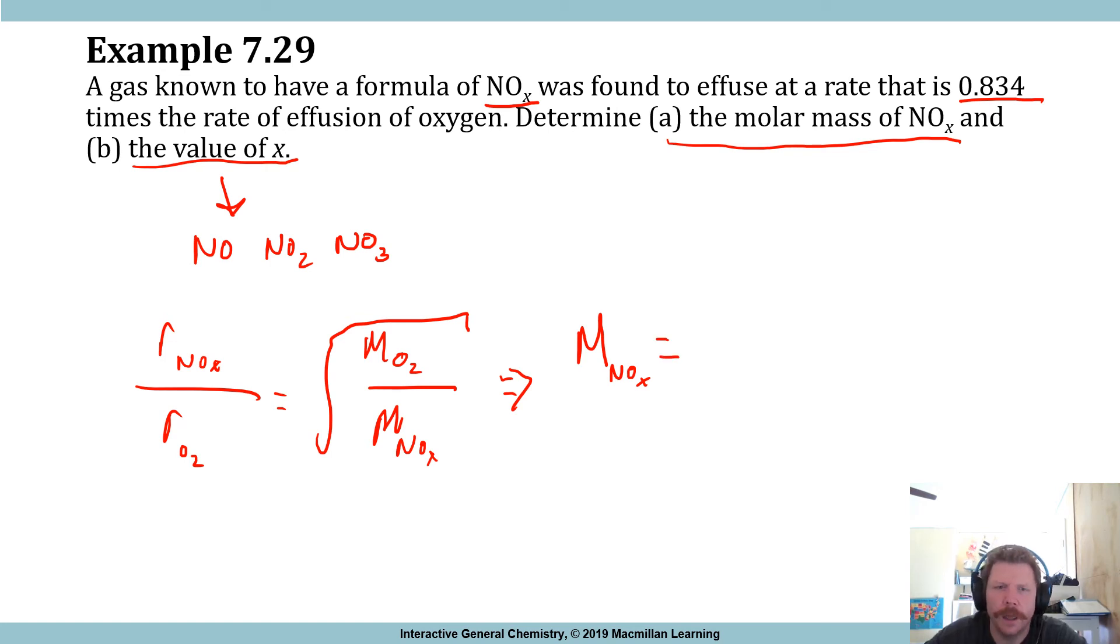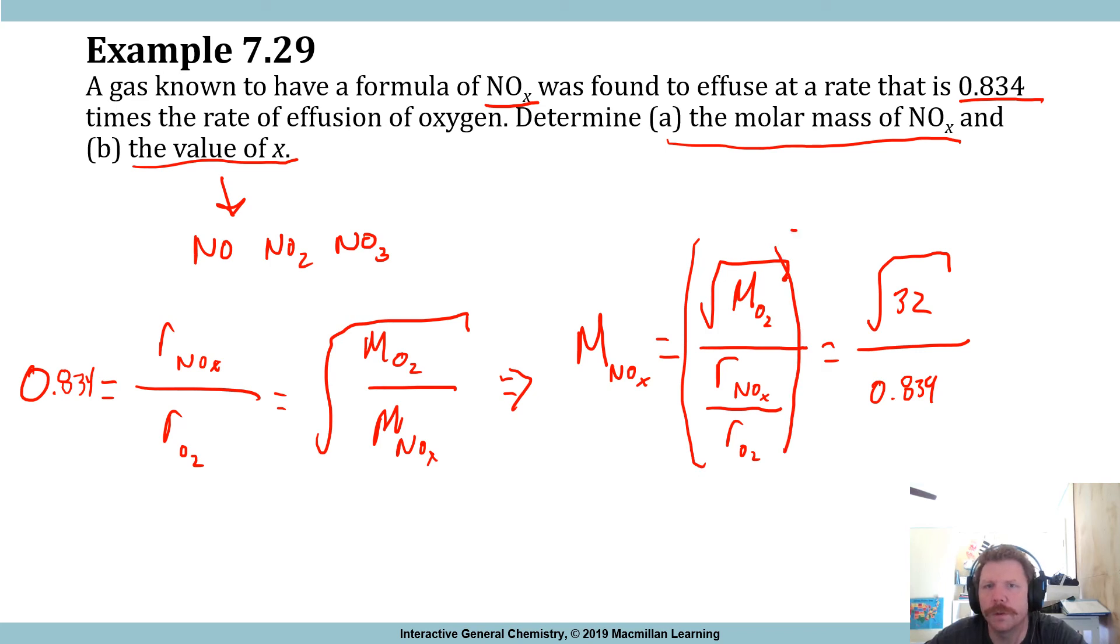We can rearrange it to be M_NOX is equal to the square root of molar mass of O2 by R_NOX divided by R_O2. This is the value. This right here we have as 0.834. So now we can rewrite this as the square root of 32 divided by 0.834. And I'm sorry, the last thing that we need to do is we need to square this, and therefore we need to square this. And so that gives us, ultimately, when we plug that all in, square root of 32 divided by 0.834, and you square that whole thing, that gives us 46 grams per mole.